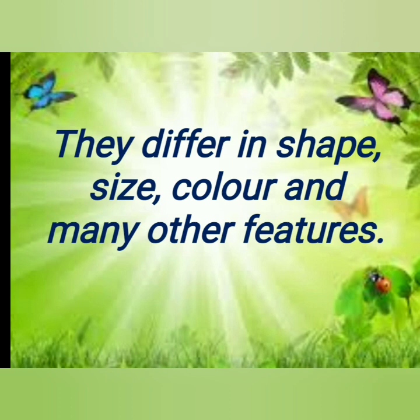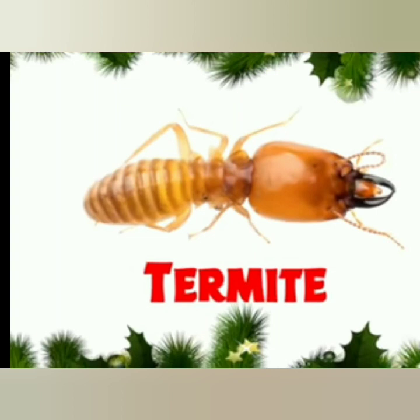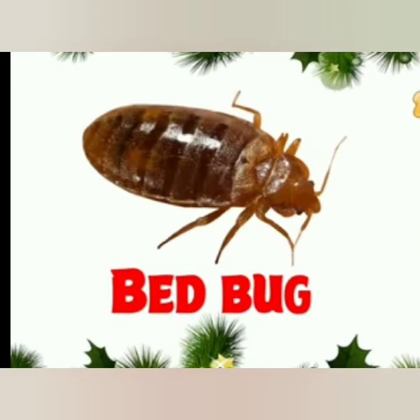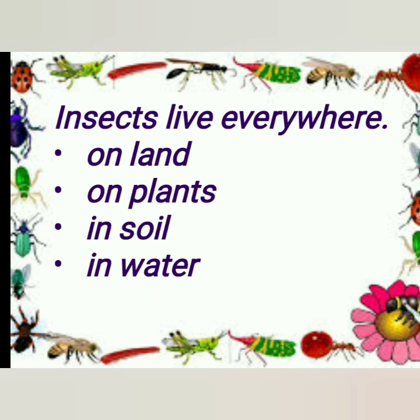They differ in shape, size, color, and many other features. For example: termite, cockroach, dragonfly, bed bug, grasshopper, etc. Insects live everywhere — on land, plants, in soil, in water. Whether you go to a desert or to mountains, you will find insects everywhere.